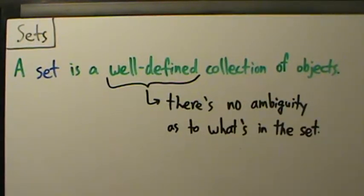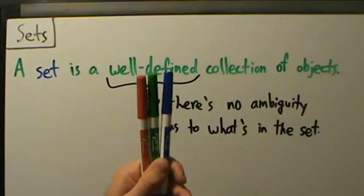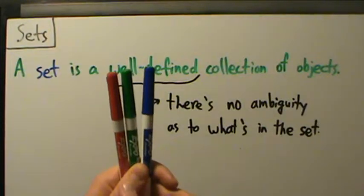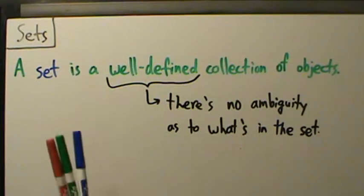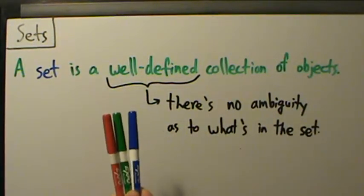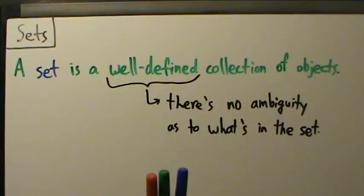All that really means is it's clear what's in the set and what's not in the set. For example, if we're talking about this collection of markers in my hand, it's clear that I'm holding a red marker, a green marker, and a blue marker. So it's well-defined what's in this collection of objects here, so we could call this a set in the mathematical context.